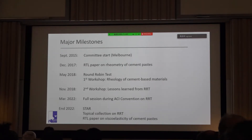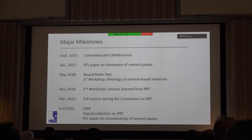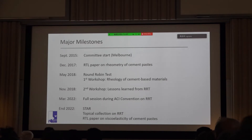Some major milestones: we started the committee in 2015-2017. In 2017, our first outcome was a RILEM technical letter paper on the rheometry of cement pastes. In May 2018, we did a Round-Robin test — three days of pure physical labor — and attached to that was our first workshop. In November of that same year, we had a second workshop. In March 2022, we presented all the results of the Round-Robin test during a full session at the ACI convention. And by the end of this year, we should have the state-of-the-art report, the topical collection, and our last RILEM technical letter paper.